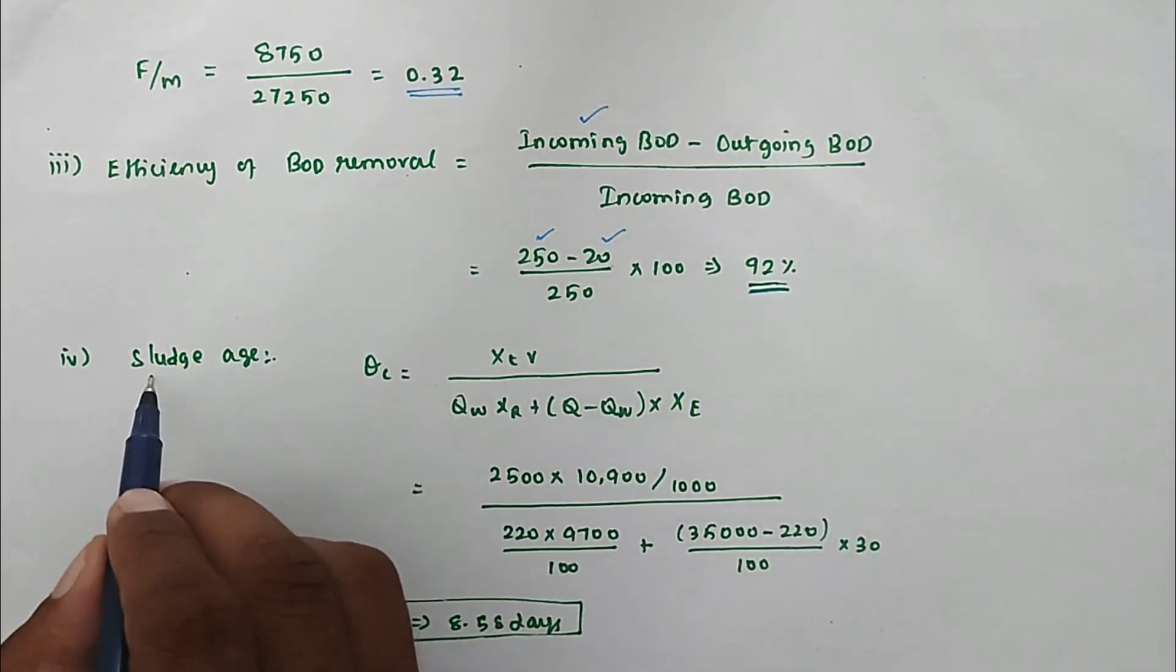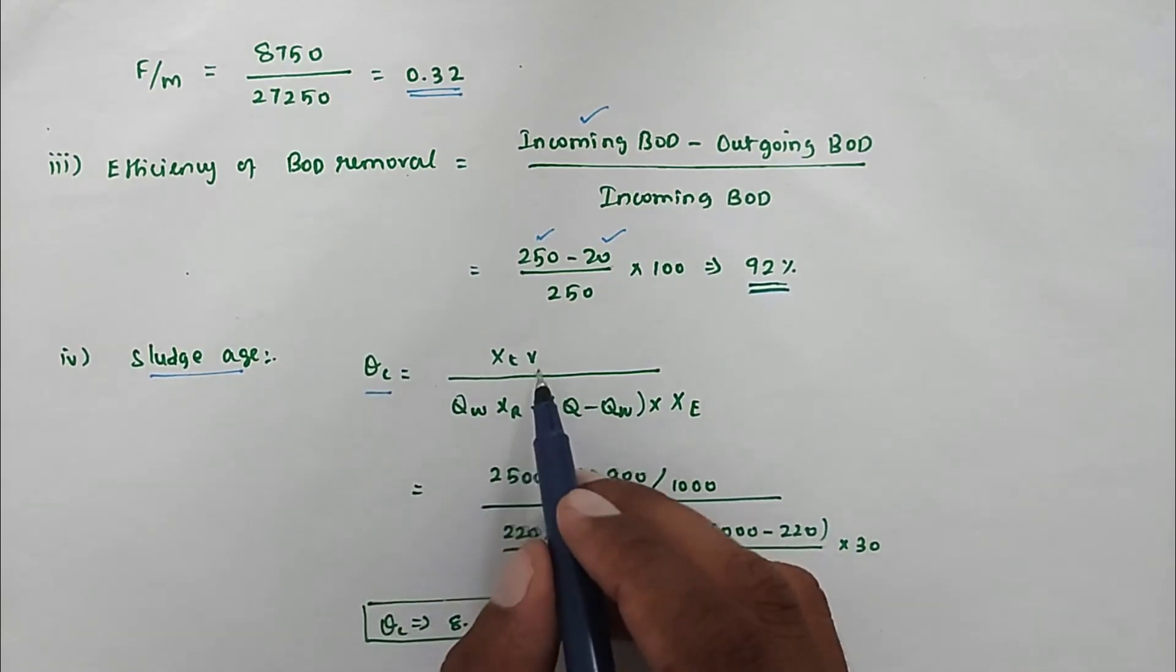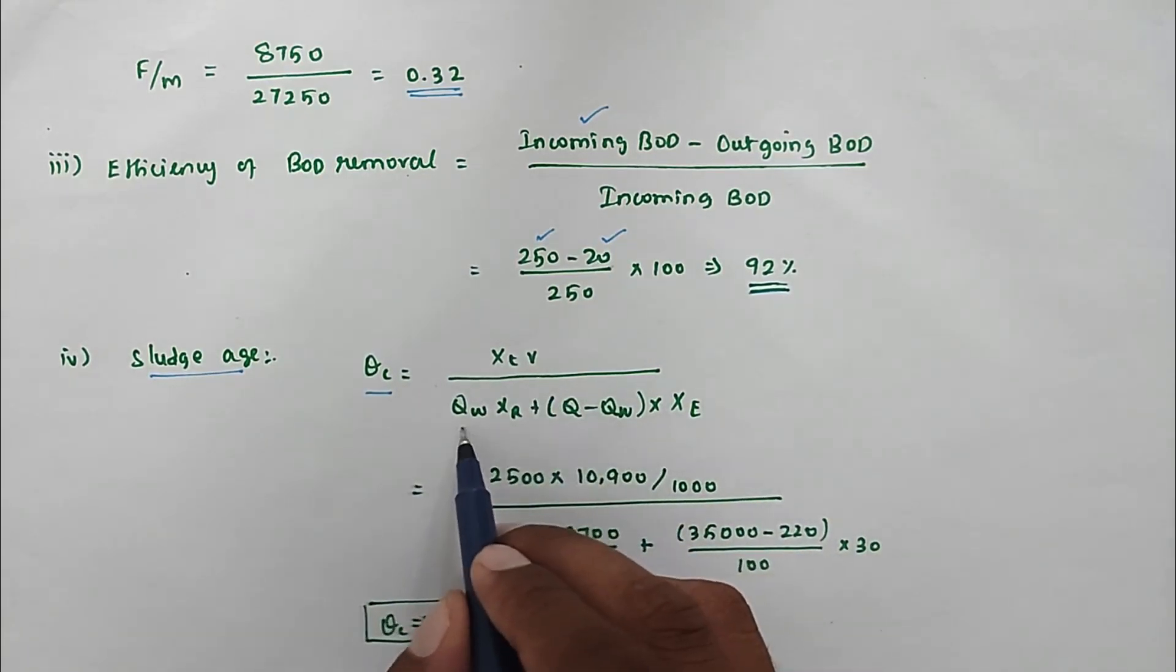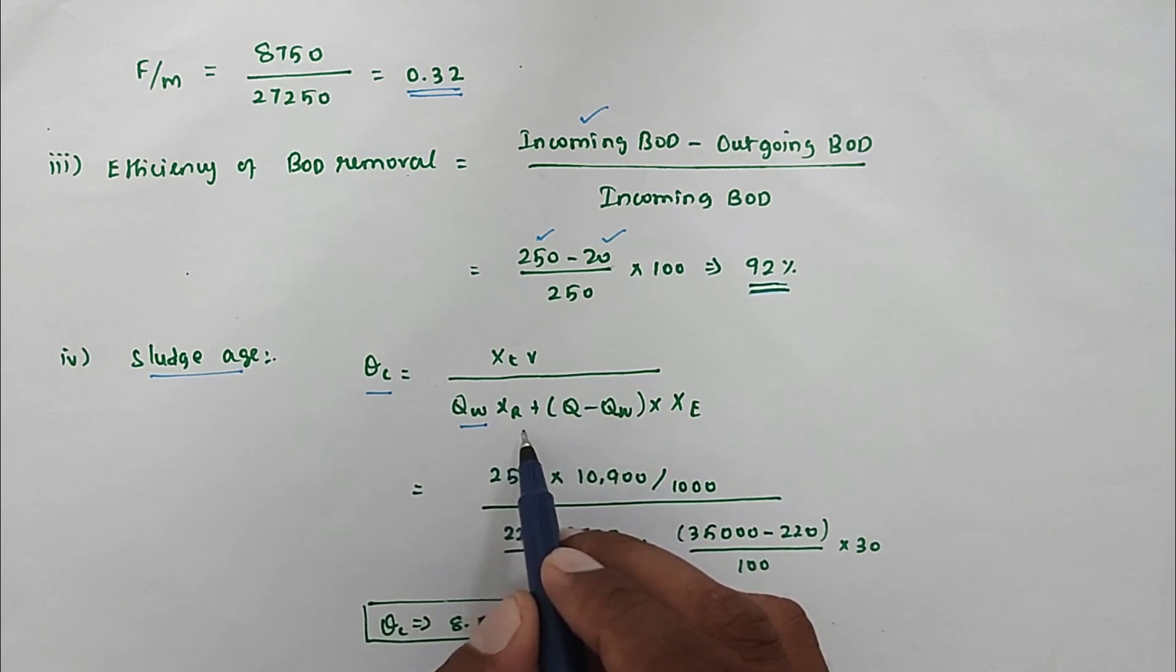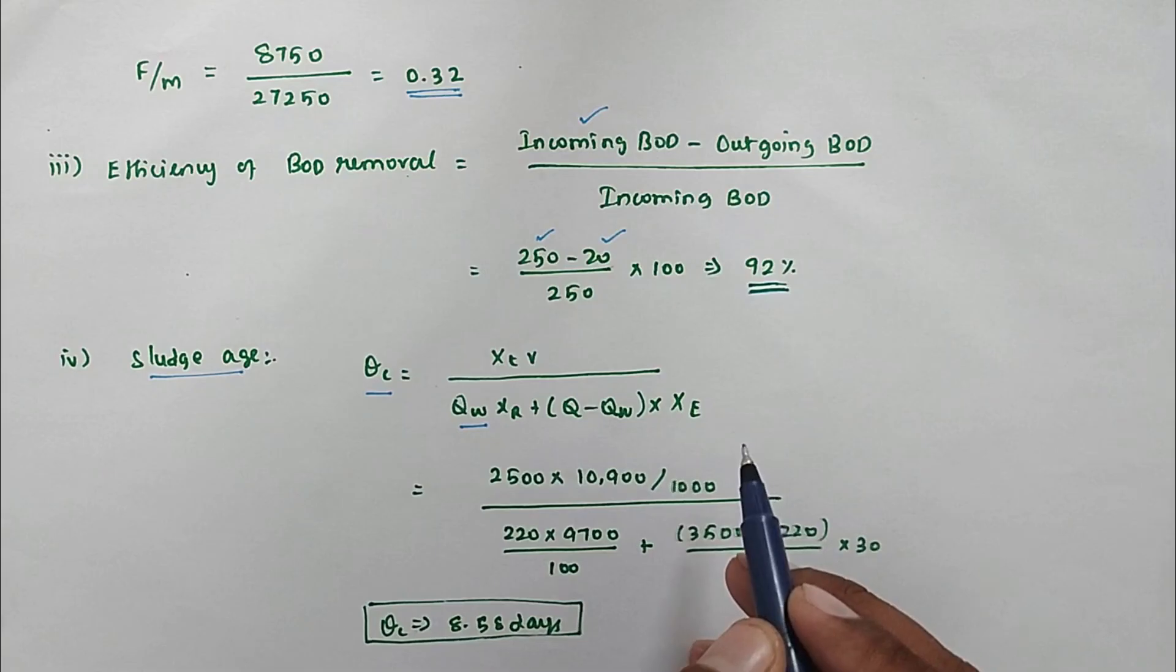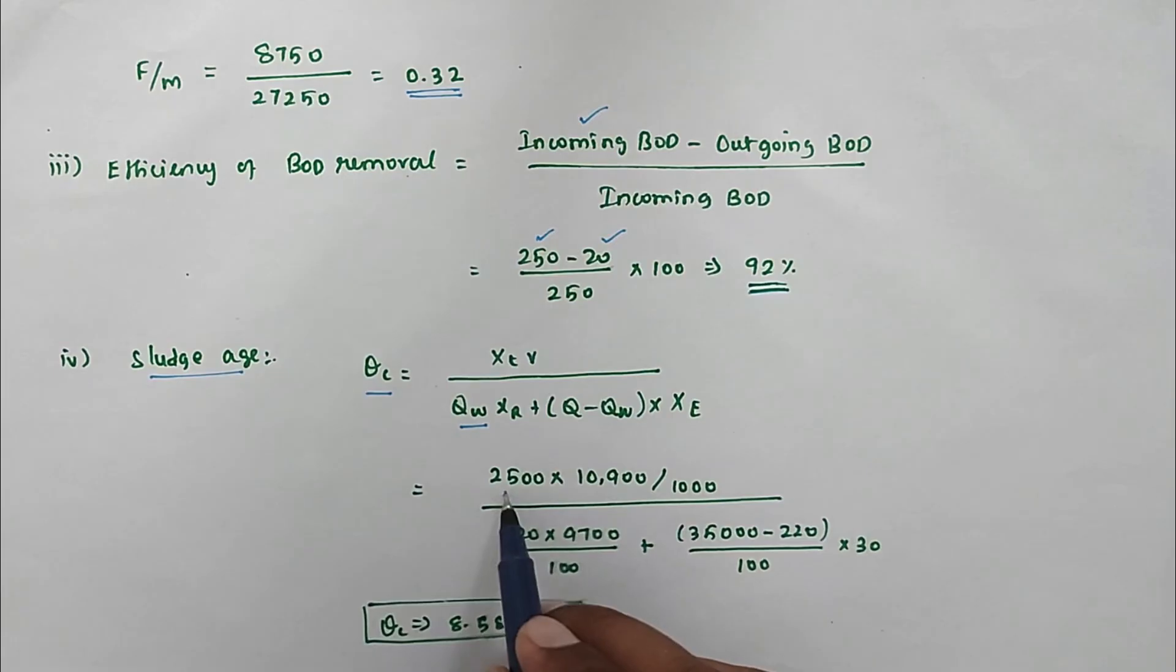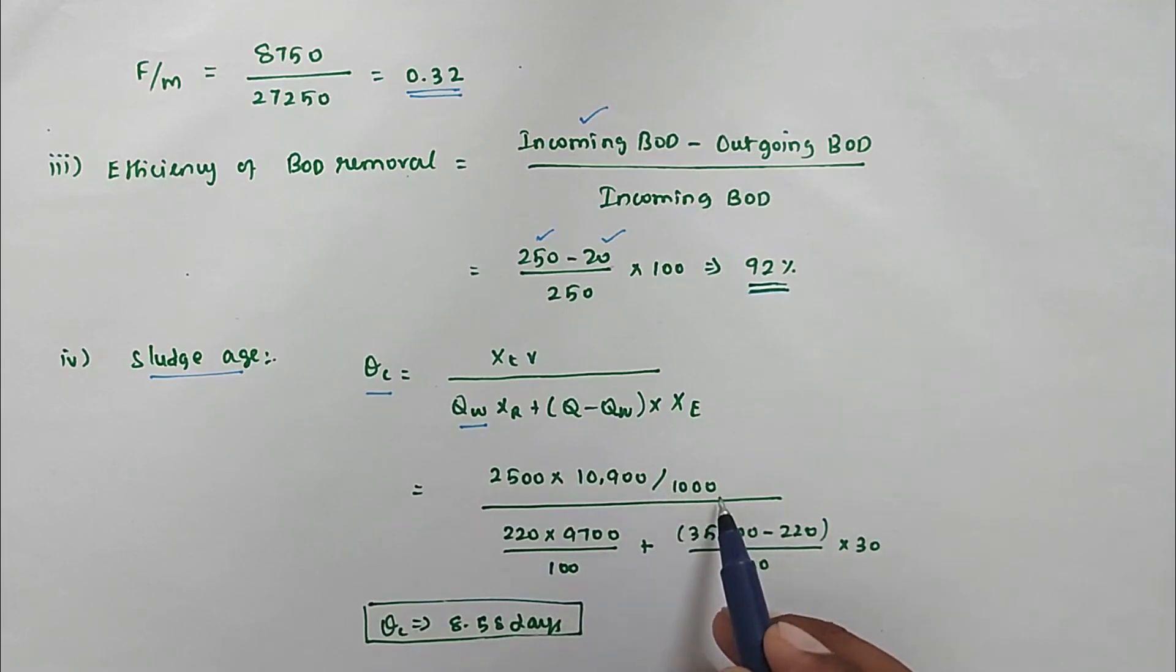Fourth question is sludge age. We know the formula: theta C equals XT times V divided by QW times XR plus (Q minus QW) times XE. Now we know all the values, so we can substitute all the values. XT equals 2500 times volume 10,900 divided by 1000.